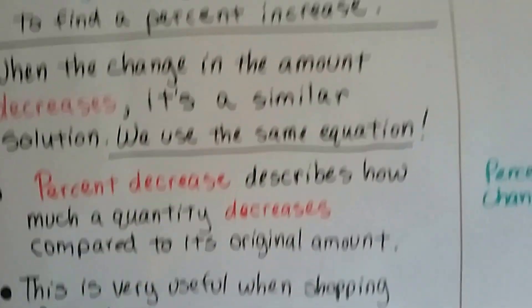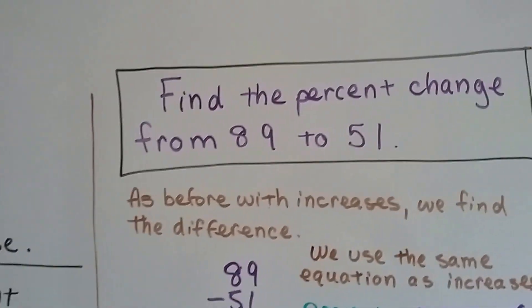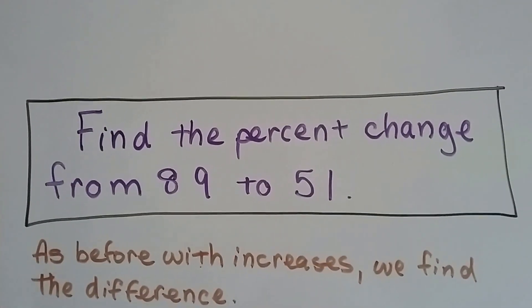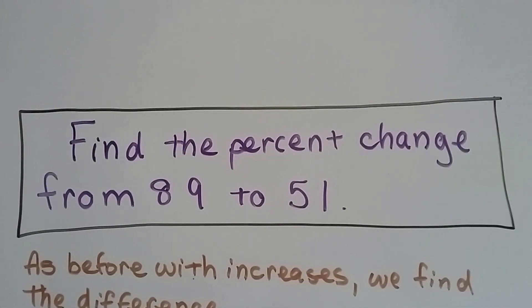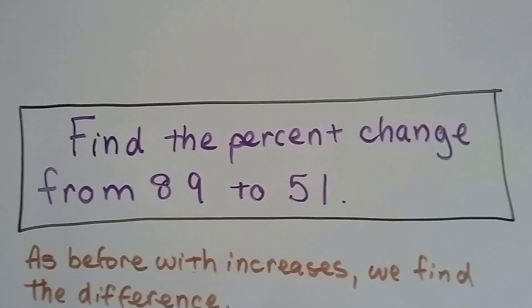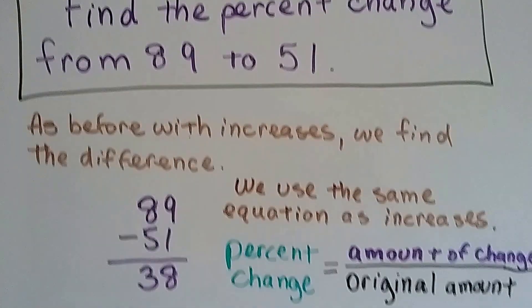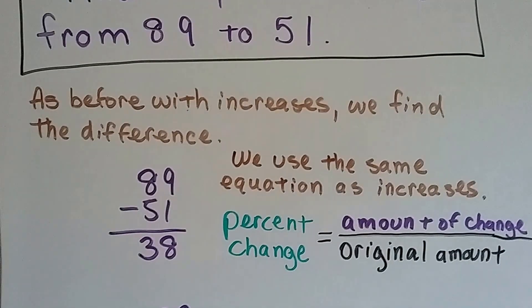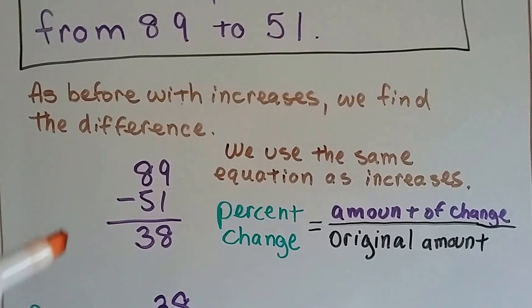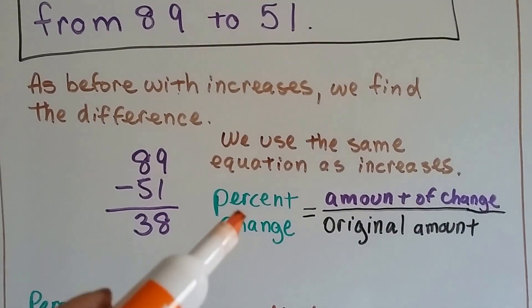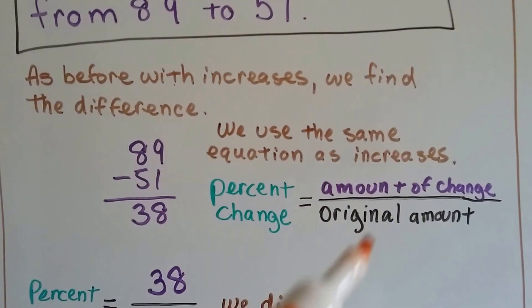What if a dress was $89 and it was marked down to $51 and you want to find out what the percentage of the sale was? You find the percent change from 89 to 51. As before with increases, we find the difference. We take 89 and we subtract 51 and we get 38. We use the same equation as increases: percent change equals the amount of change over the original amount.